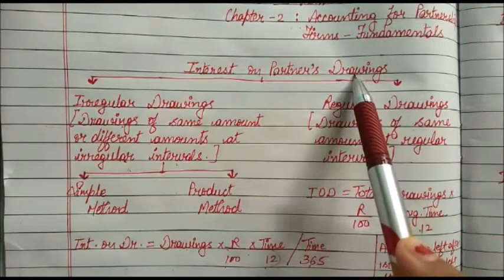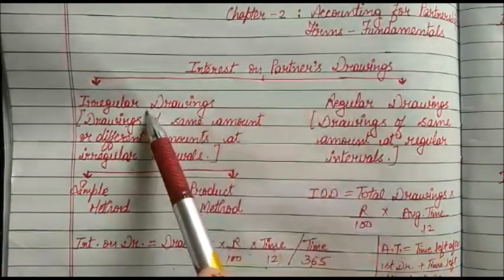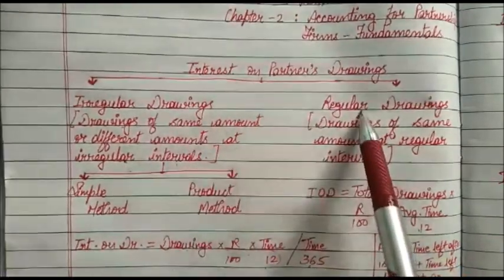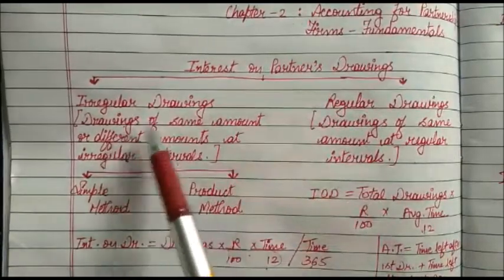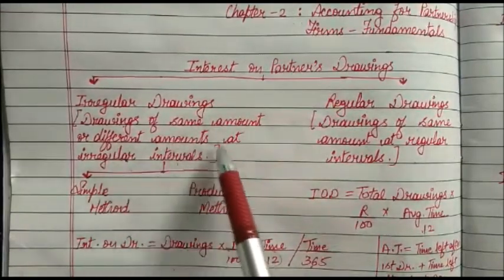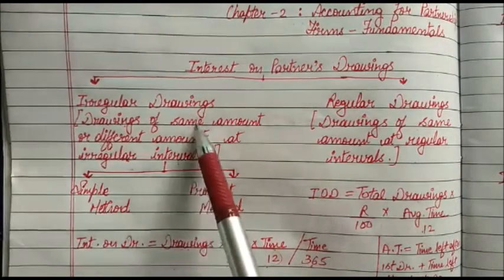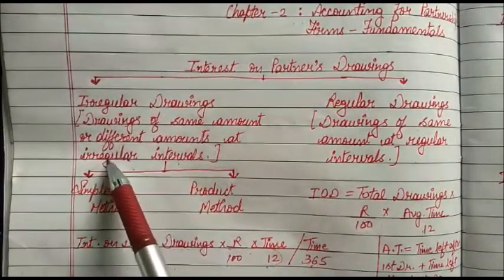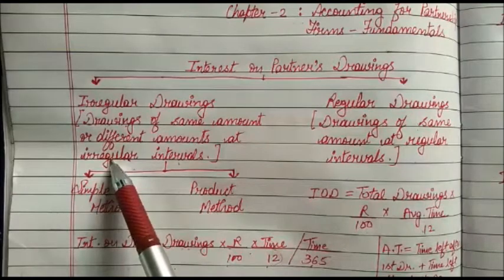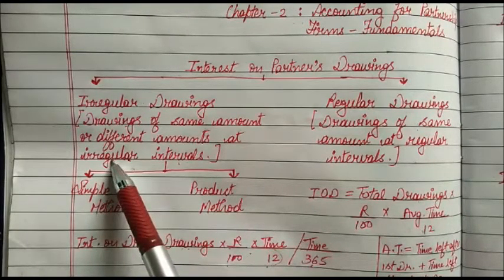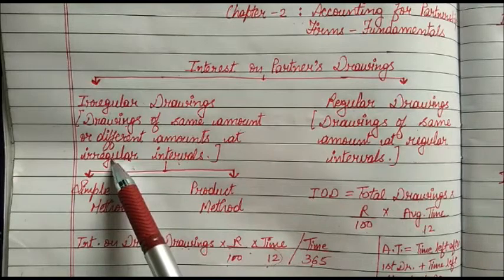Drawings are amounts withdrawn for personal use. These drawings can be irregular drawings or regular drawings. Irregular drawings means drawings of the same or different amounts at irregular intervals — for example, the partner can make a drawing on 1st April, 31st May, 15th June, or any other date they wish to draw the amount.